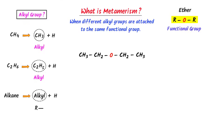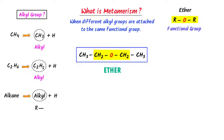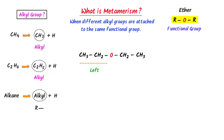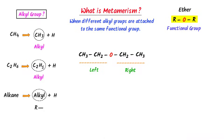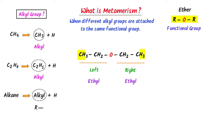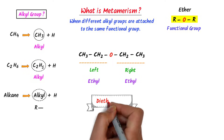Now consider this organic compound. Here the functional group of ether is present, so this organic compound is an ether. The left side of the ether has one ethyl, while the right side also has one ethyl. So we say that there are two ethyls or diethyl present in this ether. The name of this ether is diethyl ether.